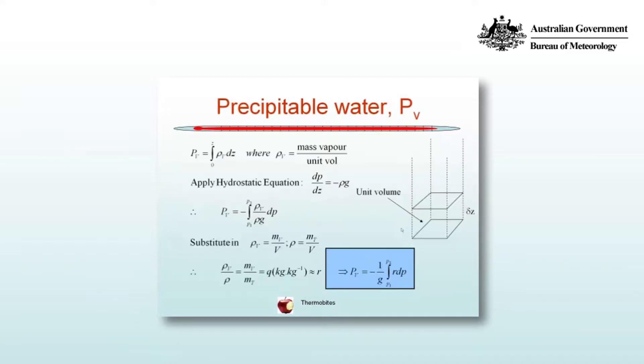So the precipitable water then, P subscript V, is equal to the integral from the surface to some height Z in the atmosphere of the density of water vapour, where the density of water vapour is defined as the mass of the vapour per unit volume. And you can see a unit volume defined there on the right, a 1m by 1m square area and then integrated through depth.